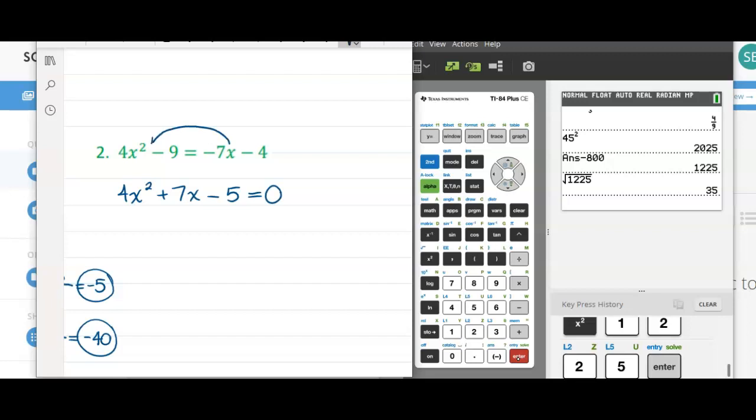Notice I moved the 7x over, it became positive. I moved the negative 4 over, it joined negative 9 and became negative 5.